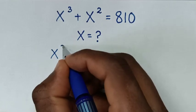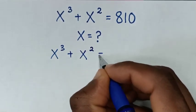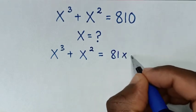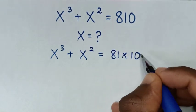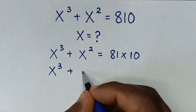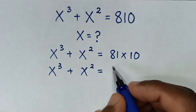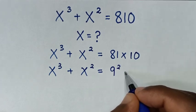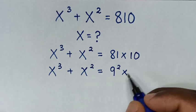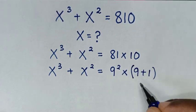From x³ + x² = 810, we note that 810 is the same as 81 times 10. In the next step, x³ + x² = 81, which is the same as 9², times 10, which is the same as 9 + 1, then in brackets.